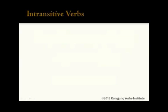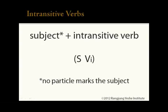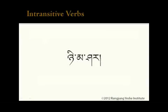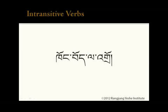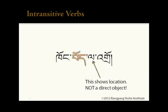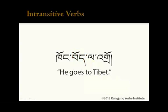Now let's look at sentences with intransitive verbs. An intransitive verb has a subject in the nominative case, meaning it is not marked by a particle, and it has no direct object. For example, 'nyi ma shar' — the verb is shar, meaning 'rose,' leaving us with the subject nyi ma, the sun. So: the sun rose. In another example, the verb means 'go' and the subject goes to Tibet. Note that be is marked with a la particle, but this is the location where the subject goes, not the direct object of the action of going — an important distinction. So the sentence reads: he goes to Tibet.